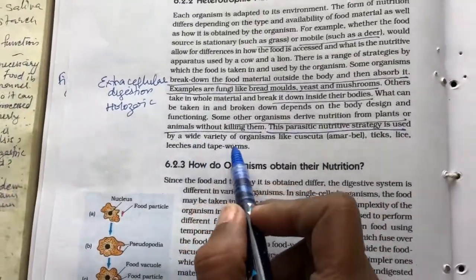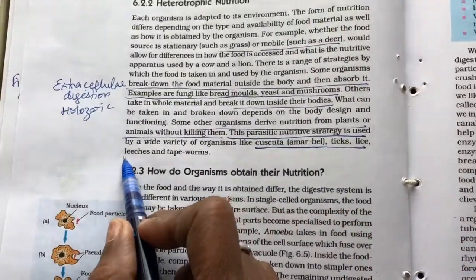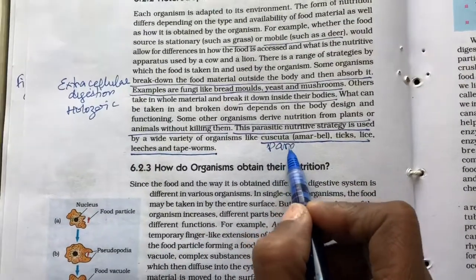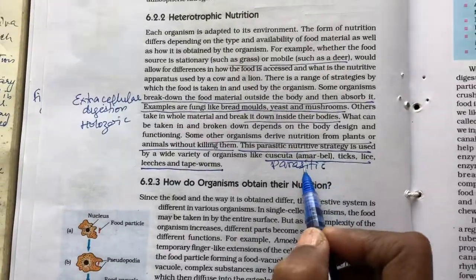This is used by a wide variety of organisms like cuscuta, amarbele, ticks, mites, lice, leeches and even tapeworms. These are all parasites.